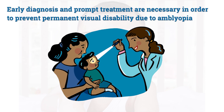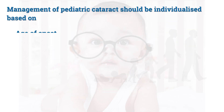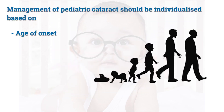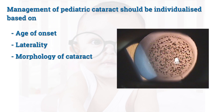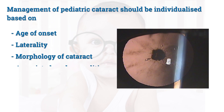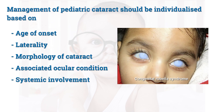Early diagnosis and prompt treatment are necessary in order to prevent permanent visual disability due to amblyopia. Management of paediatric cataract should be individualized based on the age of onset, laterality, morphology of cataract, and associated ocular and systemic conditions.